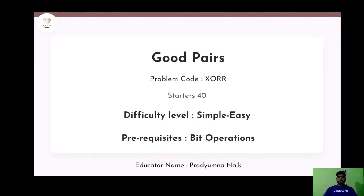Hello everyone, welcome to CodeShape YouTube channel. My name is Pradeemna and today we will be discussing the problem Good Pairs. Its problem code is XORR and it appeared in Starters 40. It's a simple easy level type of problem and prerequisites for the problem is bit operations. So let's read the problem statement and understand it.